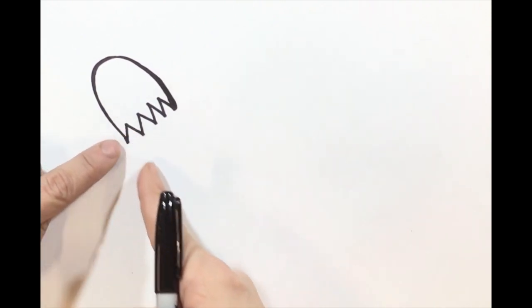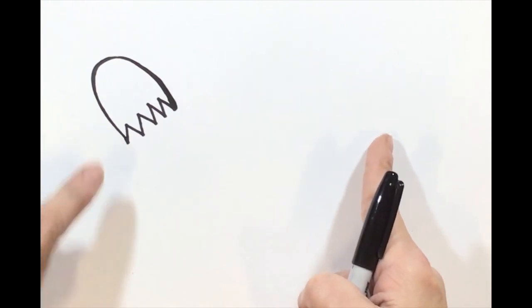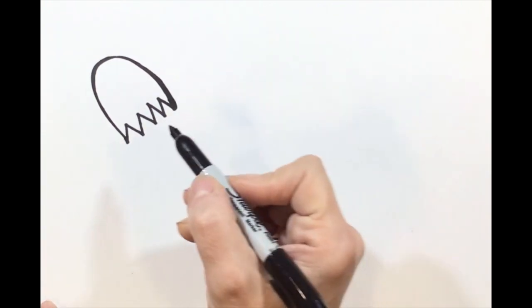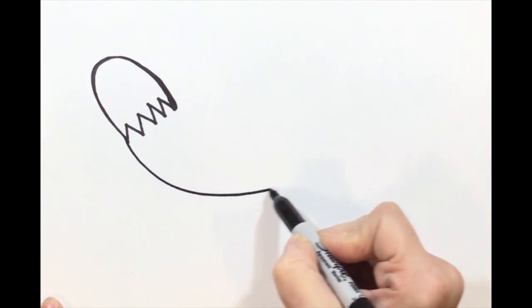Step number three, we're going to start on the end of the bottom, and we're going to go around, up, on the other side, around, and connect. And it's going to connect, and it's going to create like a football shape that is going to make the body of our rooster.